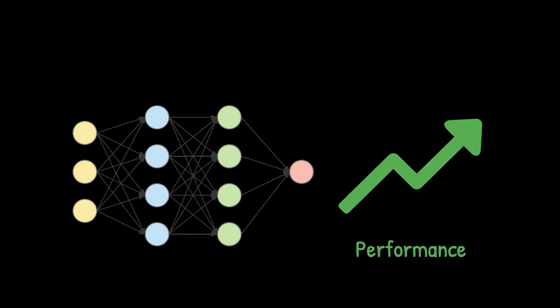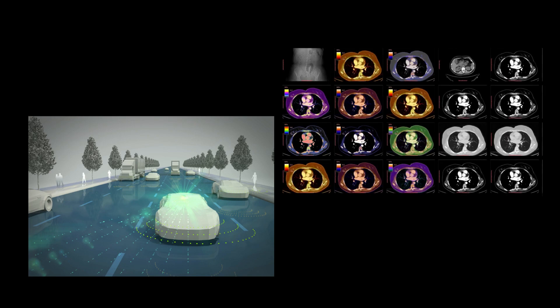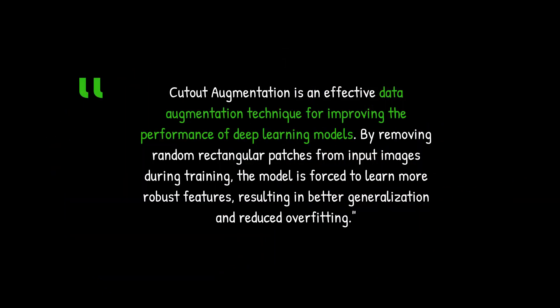Cutout augmentation has been shown to improve the performance of deep learning models, particularly in image classification tasks. By forcing the model to learn more robust features, it becomes less prone to overfitting and exhibits better generalization. Some popular use cases include object detection and classification in autonomous vehicles and medical imaging analysis, where robustness and generalization are crucial. In summary, cutout augmentation is an effective data augmentation technique — by removing random rectangular patches from input images during training, the model is forced to learn more robust features, resulting in better generalization and reduced overfitting.